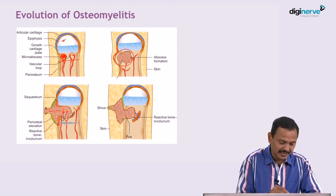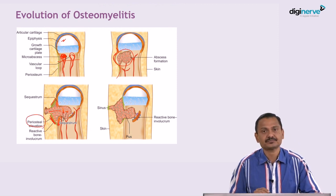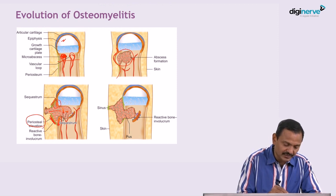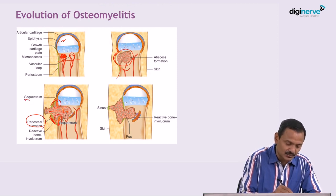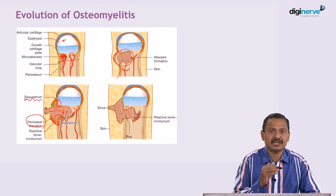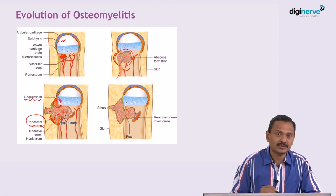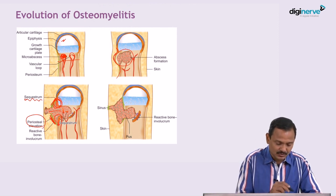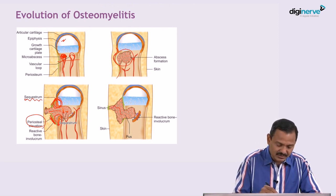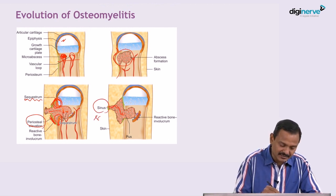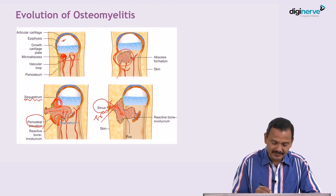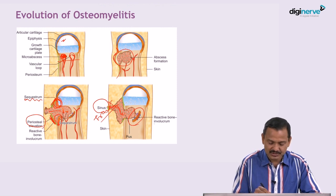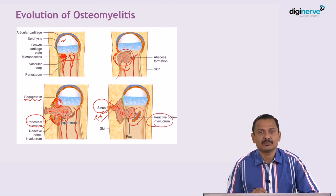This abscess will rupture and there is elevation of periosteum — periosteal elevation. Once periosteum is elevated, you will have dead bone that is sequestrum, because periosteal elevation will impair blood supply, leading to necrosis of bone, that is sequestrum. In the later stage, this abscess will rupture to the skin to form a sinus tract. And then, there is new bone formation around the sequestrum, that is called as involucrum.